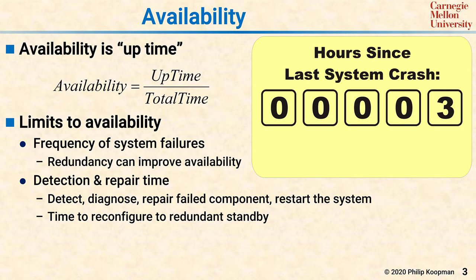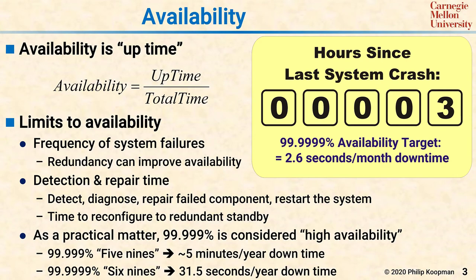Even if you have a hot spare installed, it might take time to reconfigure the system to that redundant component and then resume operation. All that time counts as part of the downtime. As a practical matter, 99.999% availability — called five nines — is considered high availability. This may not sound impressive until you consider what it means: a five nines system has a downtime budget of only five minutes per year. That means you only get to do one or two system reboots during the year before you've consumed your budget.